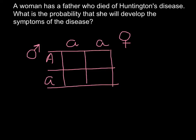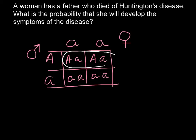In the Punnett square, the first box will have capital A and small a, the second has capital A and small a, the third has small a and small a, and the fourth has small a and small a. As you can see, two chances out of four — so the answer would be one half.